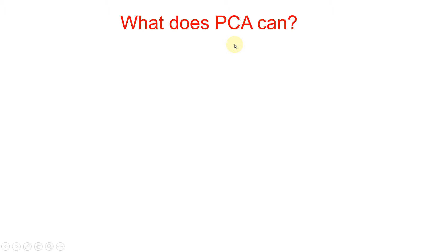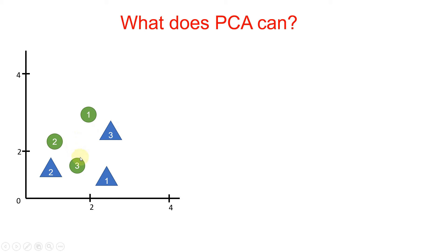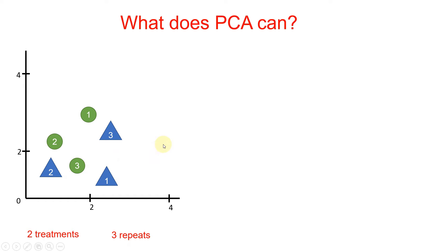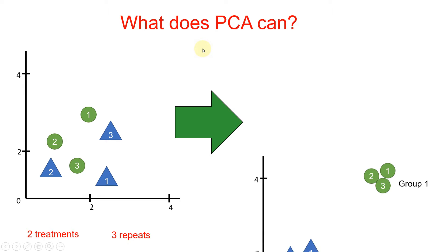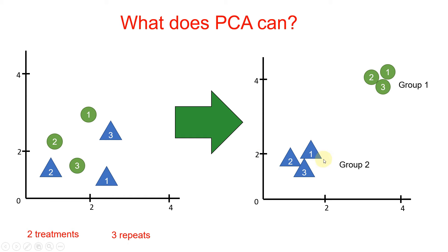Before we go further into the detail of principal component analysis, let's first try to understand what PCA can do. In this example, let's try to understand the gene expression data which has been plotted in the form of these samples. You can see here there are actually two treatments, each mentioned with a different color — one green and one blue. Each treatment has three biological repeats, so there are totally six samples, all randomly placed in this space. PCA will rearrange all these samples and place the similar or correlated samples into one group.